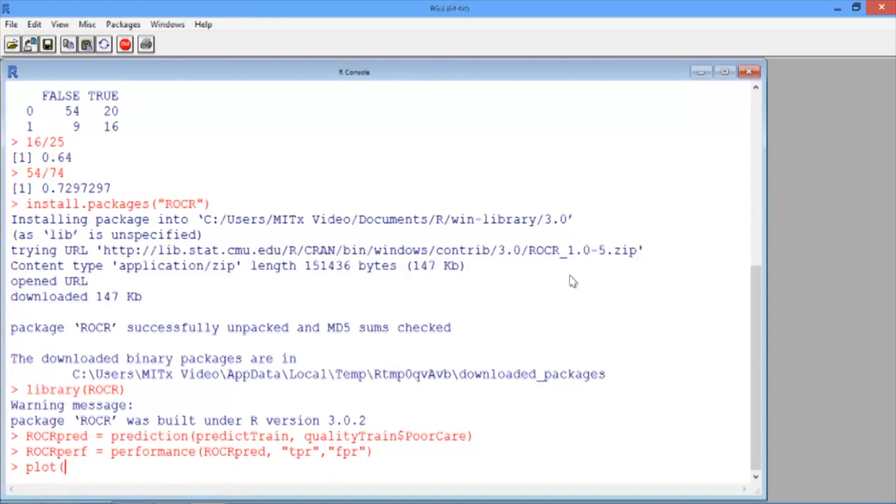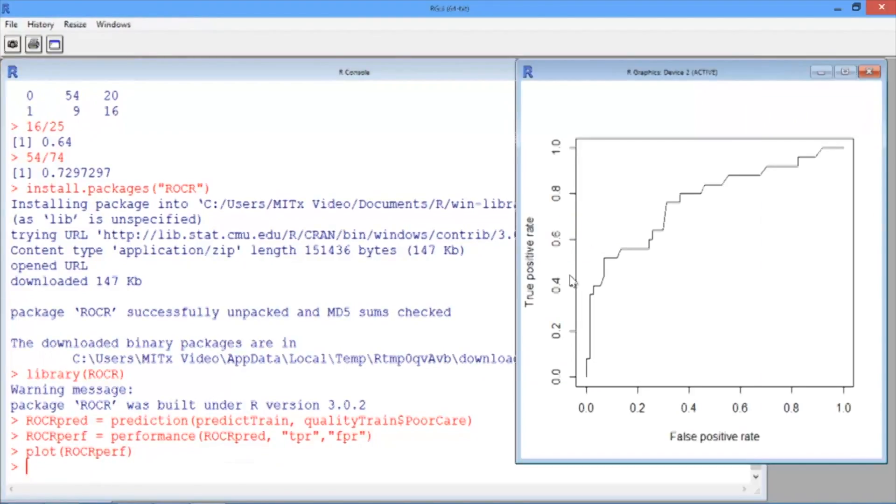Now we just need to plot the output of the performance function ROCRperf. You should see the ROC curve pop up in a new window. This should look exactly like the one we saw in the slides.